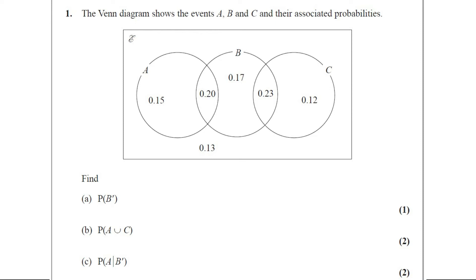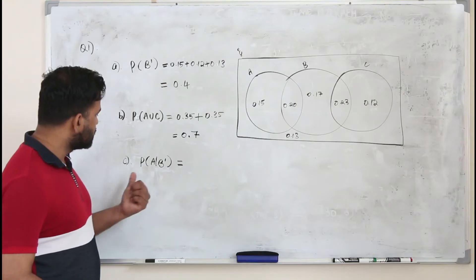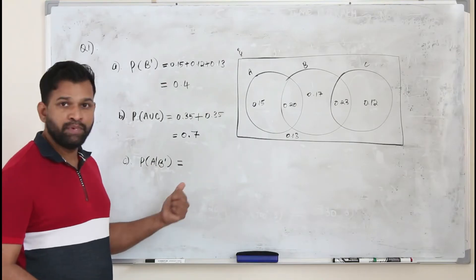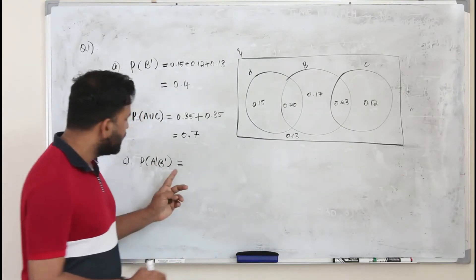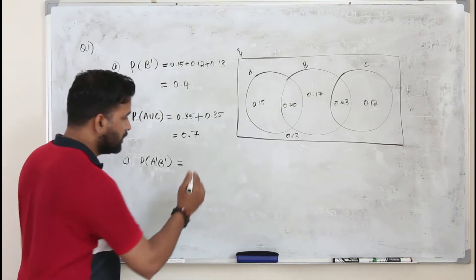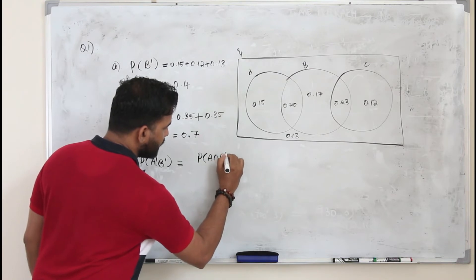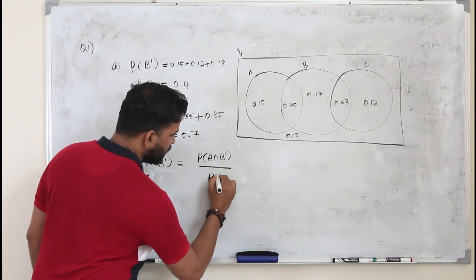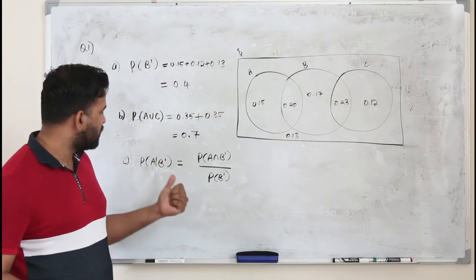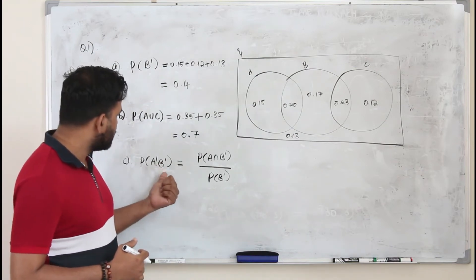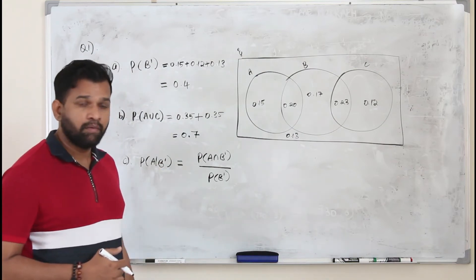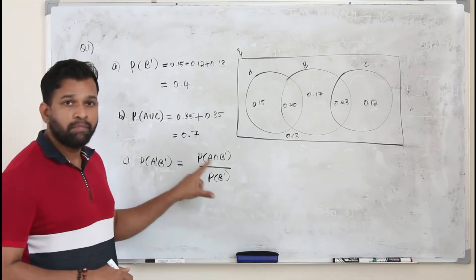Part C. Find P of A given B dash. This question got two marks. P of A given B complement. A given B complement, you can either apply the formula. Formula is P of A intersection B dash over P of B dash. That's the formula for this conditional probability.